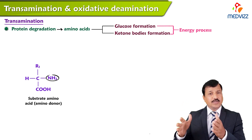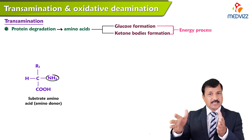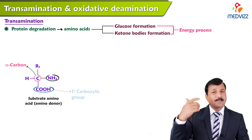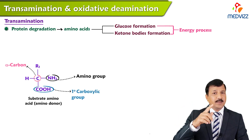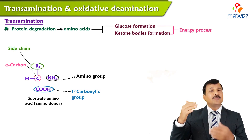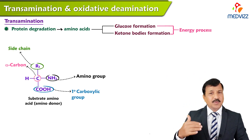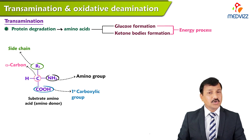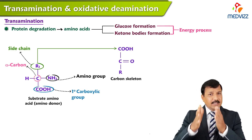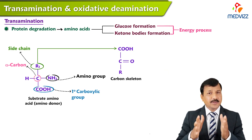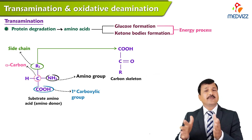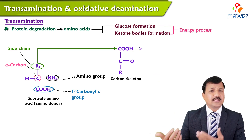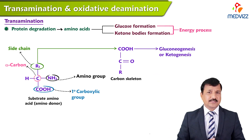As shown in the figure, there is an amino acid with an alpha carbon, a primary carboxyl group, a primary amino group, and a side chain written as R — or if it is alanine, the side chain is CH3. This entire carbon skeleton, whenever an amino acid is undergoing catabolism, will go towards energy generation.